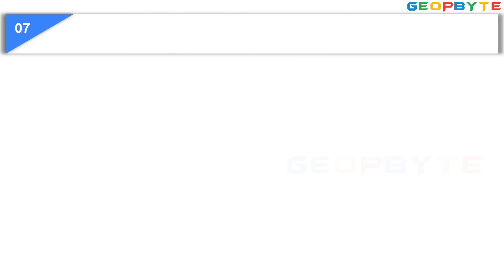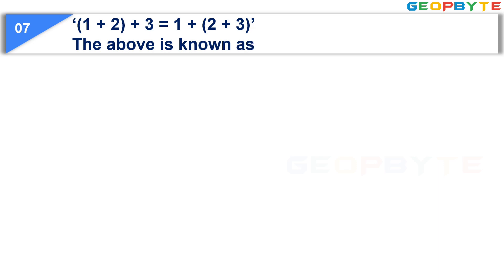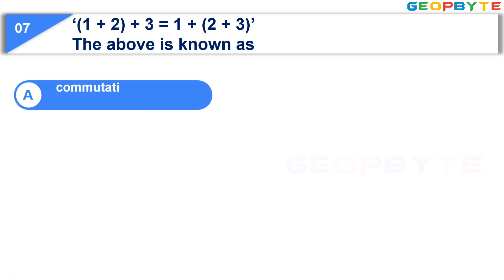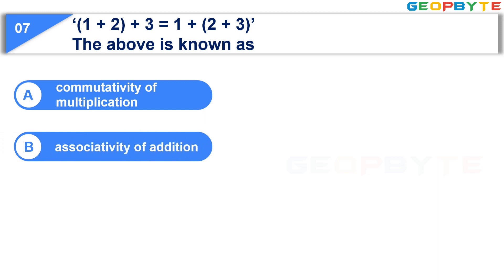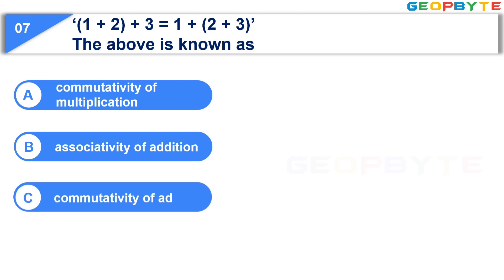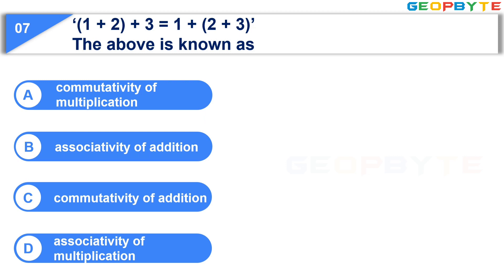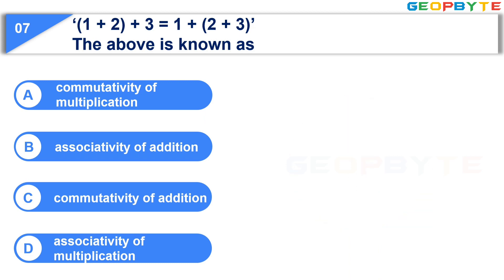Now let us see the next question: 1 + (2 + 3) = (1 + 2) + 3. The above is known as. Option A: Commutativity of multiplication. Option B: Associativity of addition. Option C: Commutativity of addition. Option D: Associativity of multiplication. Your time starts now. Your time is up and the correct answer is Option B: Associativity of addition. Moving to the 8th question.